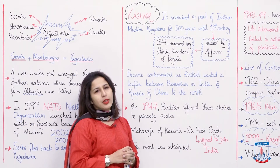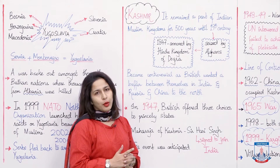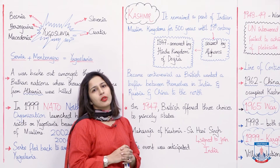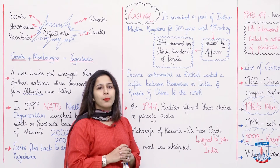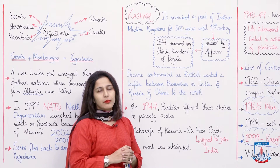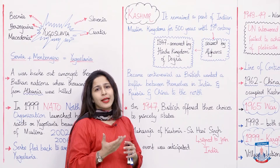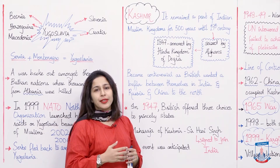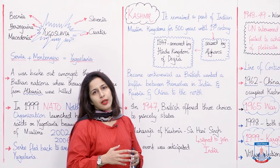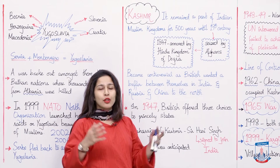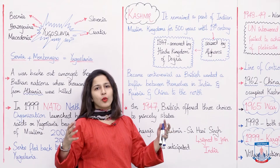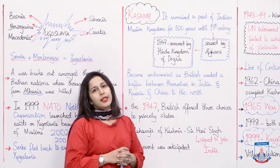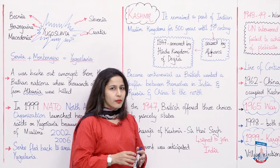Now we have talked about international relations regarding the Palestine issue, about Bosnia, about the Gulf region. Now we are going to discuss a very controversial conflict amongst Pakistan and India over a piece of land which is known as Kashmir. This chapter on international relations discusses how conflicts have been dealt with in history, up to today, by several countries.